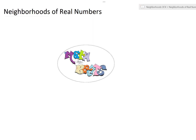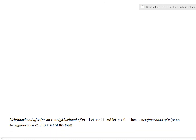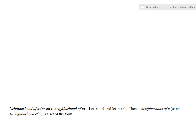Math and beats video time — we're going to talk about neighborhoods of real numbers. What's a neighborhood? The neighborhood of a number x, or sometimes an epsilon neighborhood of x: let x be a real number and let epsilon be a positive real number.